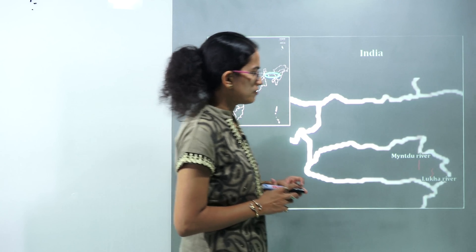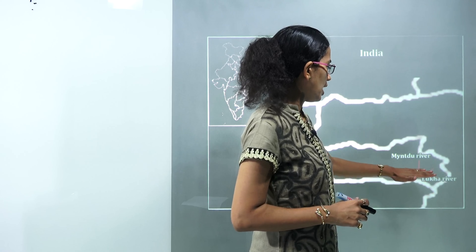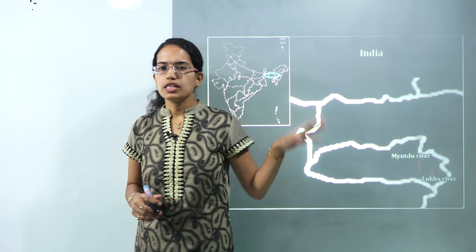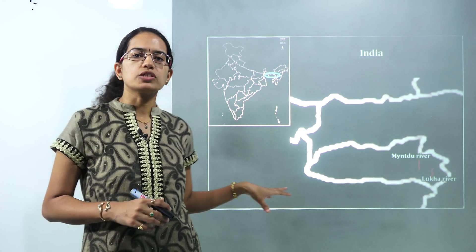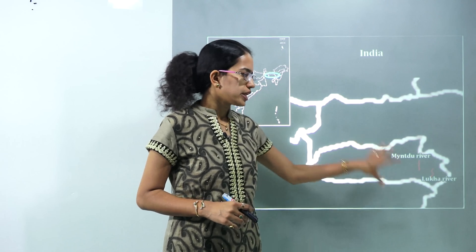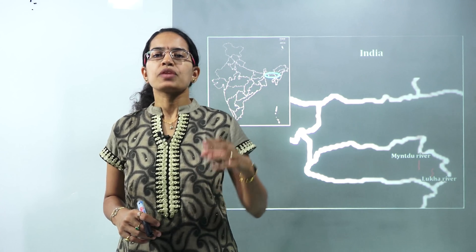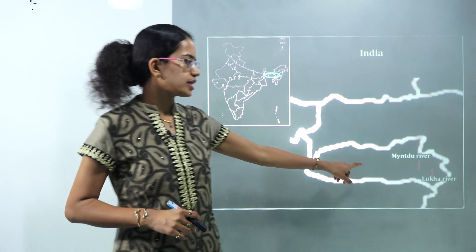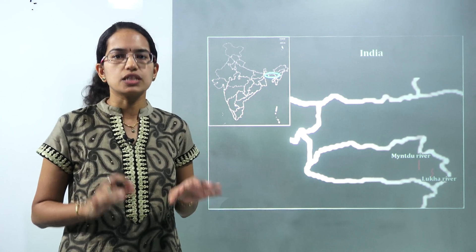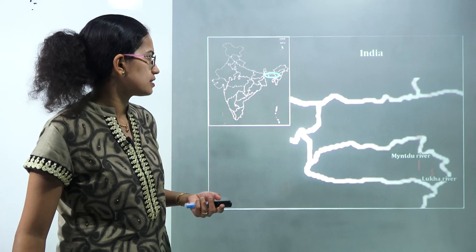Two important rivers in Meghalaya are the Myntdu river and Lukha river. These rivers are part of the Jaintia Hills in Meghalaya. The area is notable due to coal field mining, which has resulted in the water no longer being potable — it has been declared unfit for human consumption.